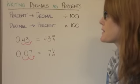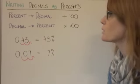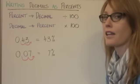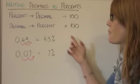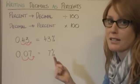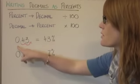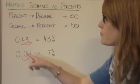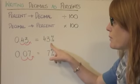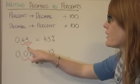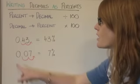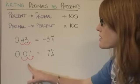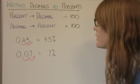So how do we write decimals as percents? You just saw us writing percents as decimals by dividing by 100 and moving the decimal point two places to the left. Doing the opposite — writing a decimal as a percent — means multiplying by 100, which means moving that decimal point two places to the right. So 0.43 becomes 43%. Don't forget the percent symbol. 0.07 written as a percentage: move the decimal point two places to the right, giving us 7%.